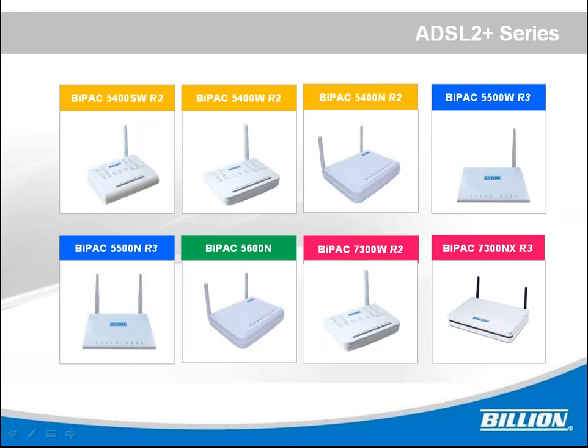The 7300W is 1x1 11N with a 4-port switch. The 7300NX is 2x2 11N with a USB port. The USB port can also be used as a WAN interface once you connect a 3G or 4G USB dongle. At that time, we could set that as a WAN interface, making it easy to use and flexible for the service provider.